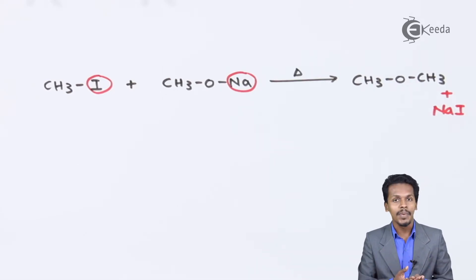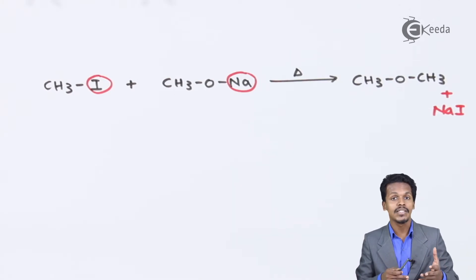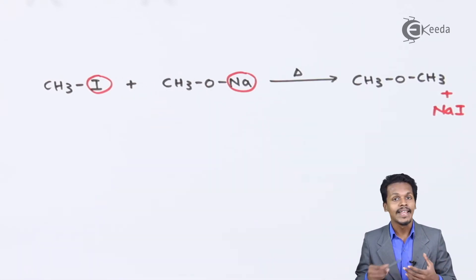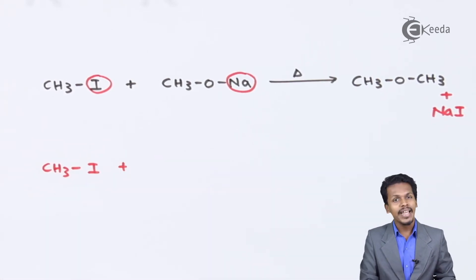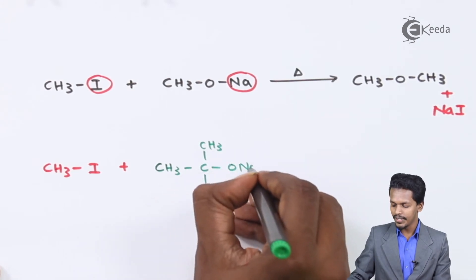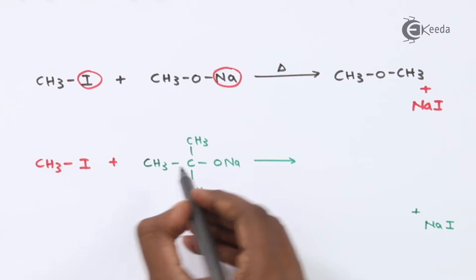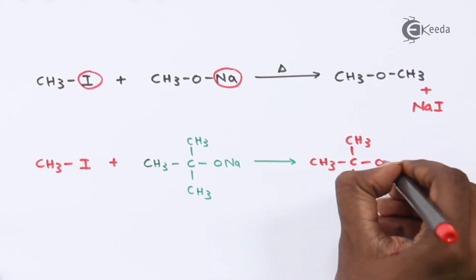To prepare a mixed ether, the sodium alkoxide should consist of a higher number of carbon atoms while the alkyl halide should consist of a lower number of carbon atoms. For example, if CH3I is reacted with sodium tert-butoxide (CH3C(CH3)2ONa), the byproduct is NaI and the main product is CH3C(CH3)2OCH3.